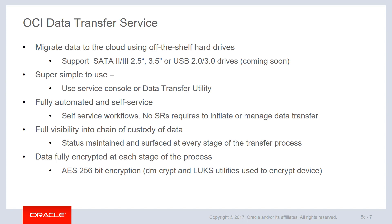The Data Transfer Service is a solution that allows us to migrate data to the cloud. Customers can use hard drives to transfer their data. We currently support both ATA 2.5 and 3.5 inch hard drives, and USB support will be added in the near future. It's very easy for customers to use and completely self-service — there is no need to talk to anyone at Oracle or create a service request. At any given time, the customer has full visibility into the chain of custody of their data. When the customer ships the data, it's encrypted by the Oracle-provided utility to ensure data is secure during transit. Once received, we upload it directly to the object storage bucket of the customer's account, where the data is encrypted at rest as well. The data is always secure from start to finish.